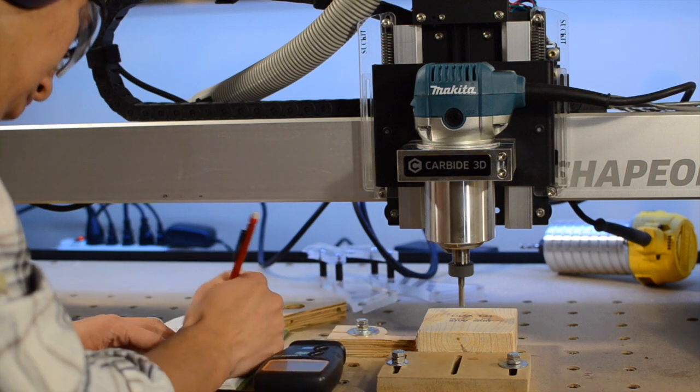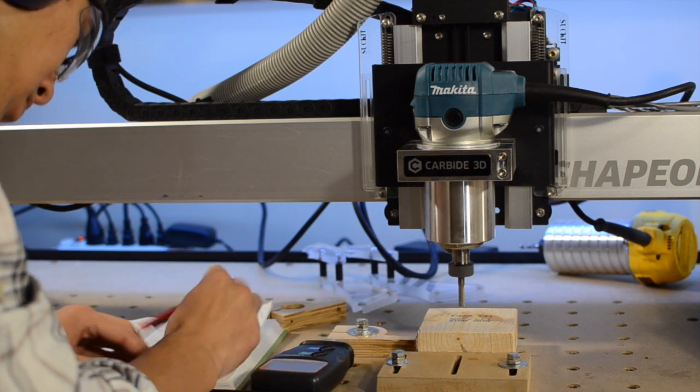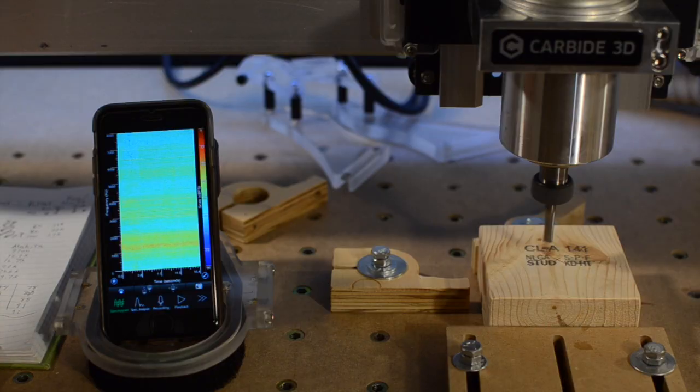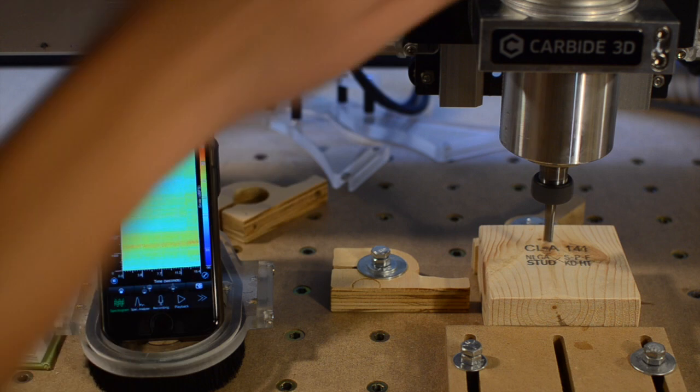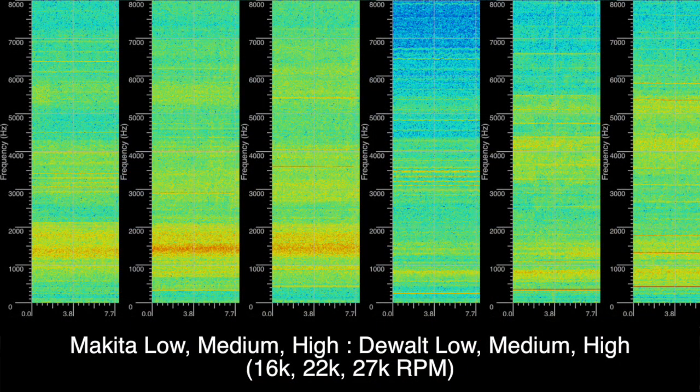One other thing I was interested in as someone with roommates was the acoustic characteristics of each router. Neither of these would ever be considered quiet, but could one be less offensive than the other? Looking at the frequency response across the DEWALT's usable RPM range of 16,000 to 27,000 RPM,